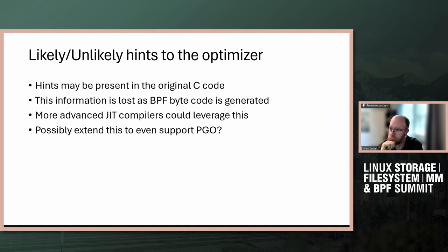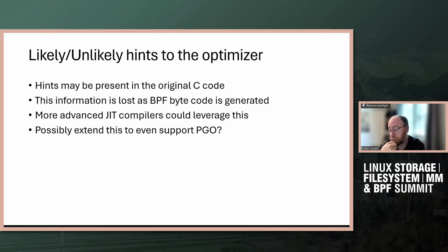My understanding is that in regular Linux kernel C code, this definitely improves performance. Particularly as we make a more advanced JIT — if you can understand which paths are likely or less likely, we can optimize so that there are fewer branches taken.